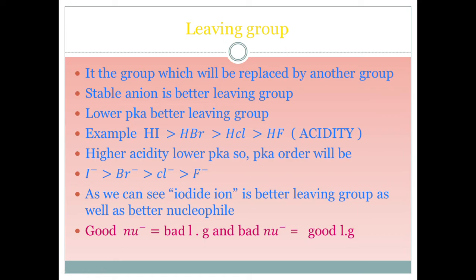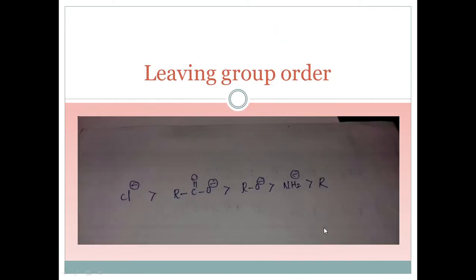Leaving groups are the groups which leave, and their place is replaced by a nucleophile. A stable anion — a group that leaves and forms a stable anion — makes a better leaving group. Lower pKa means a better leaving group, since pKa is inversely proportional to acidity. HI is the strongest acid, followed by HBr, HCl, and HF, so I⁻ has the lowest pKa. This is the same order as nucleophilicity — I⁻ is both a better leaving group and a better nucleophile.